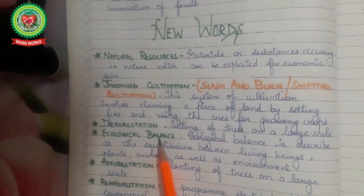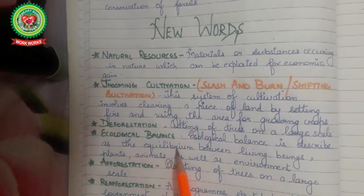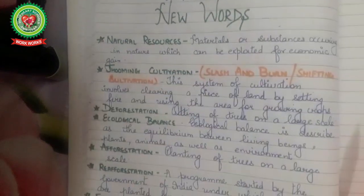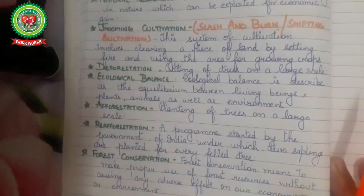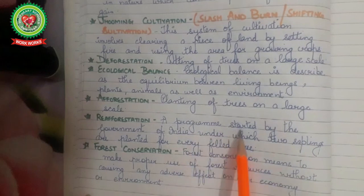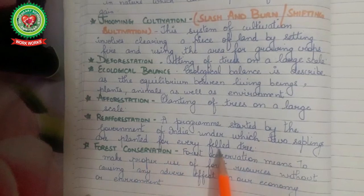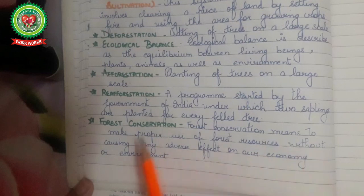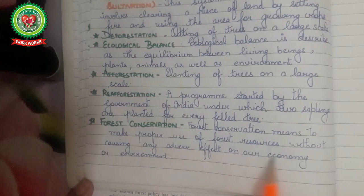Ecological balance is described as equilibrium between living beings — plants, animals — as well as environment. Afforestation: planting of trees on a large scale. Reforestation: a program started by the government of India under which two saplings are planted for every felled tree. Forest conservation means to make proper use of forest resources without causing any adverse effect on the economy or environment.